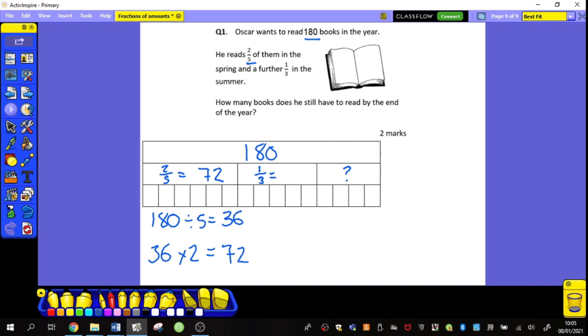In the summer he reads a further one-third of books. So I've got my whole again and he's going to read one-third of it. I'm going to split it by my denominator, this time by 3 gives me 60. And I'm going to pick one of them. So 60 multiplied by 1 remains 60. So he has read 72 books and 60 books.